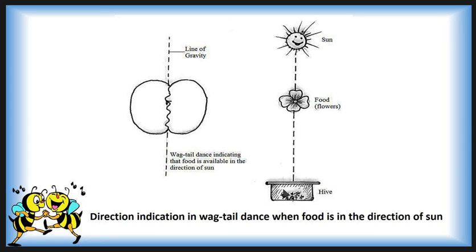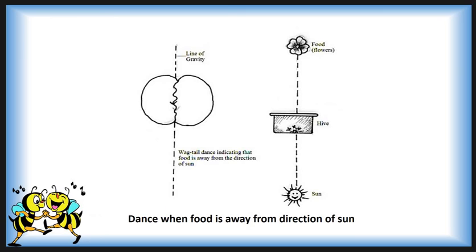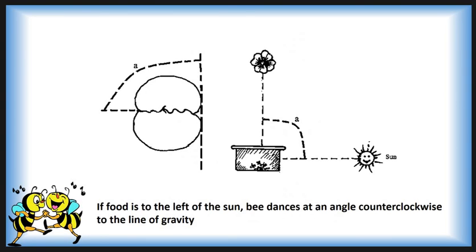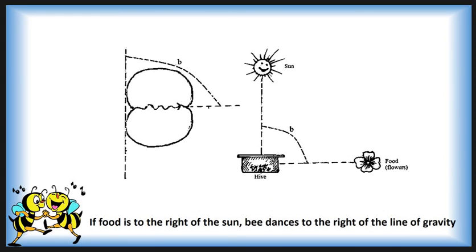When the food source is in the direction of the sun, the worker bee performs the tail-wagging dance in the upward direction along the line of gravity. If the food source is in the opposite direction to the sun, the bee dances downward. If the food source is to the left of the sun, the bee dances at a counterclockwise angle to the line of gravity. If the food source is to the right of the sun, the bee dances to the right of the line of gravity.